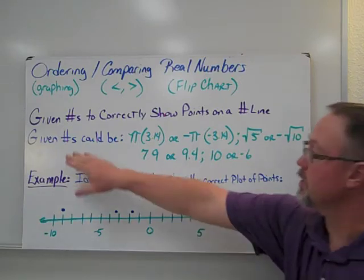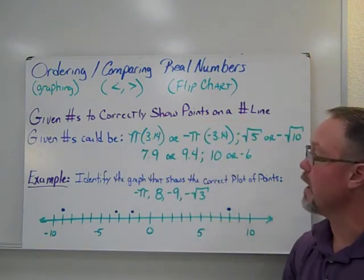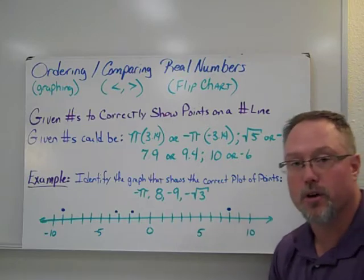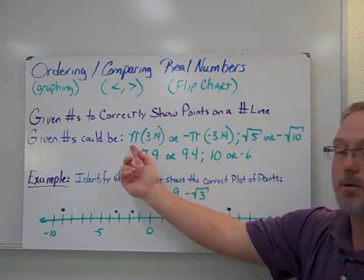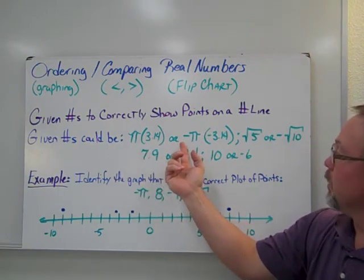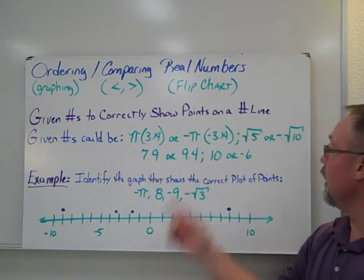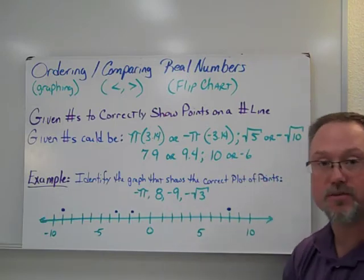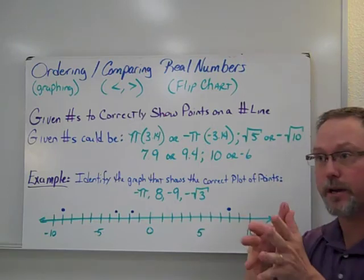What they're going to do in this part is they're going to be given numbers to correctly show points on a number line for the graphing part or the ordering. So they're going to give you a variety of different numbers that you're going to see in this section. The numbers that they could give you are the symbol pi, which is 3.14, or they can give you a negative pi which is just negative 3.14. They can give you a square root of 5 or a negative square root of 10.